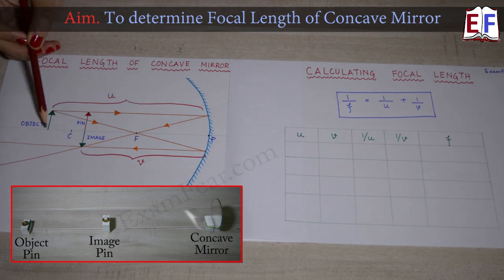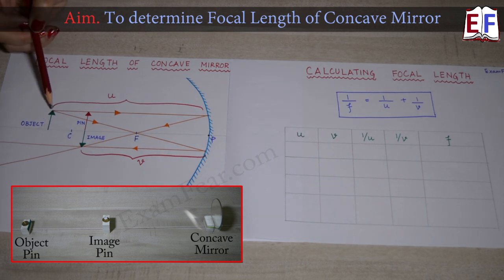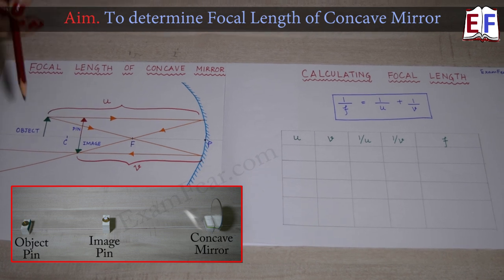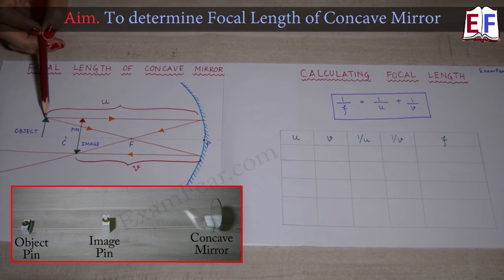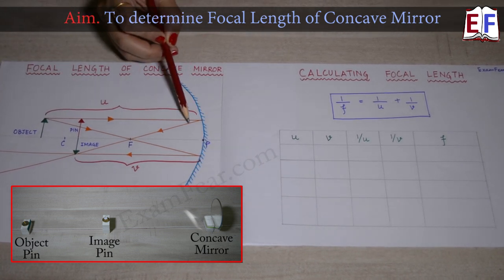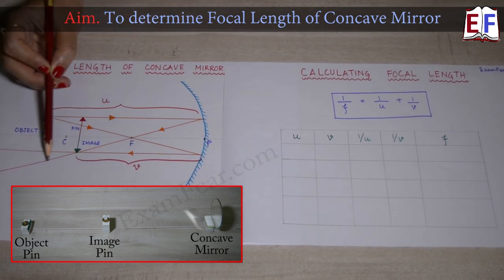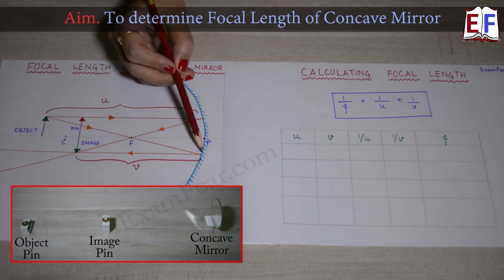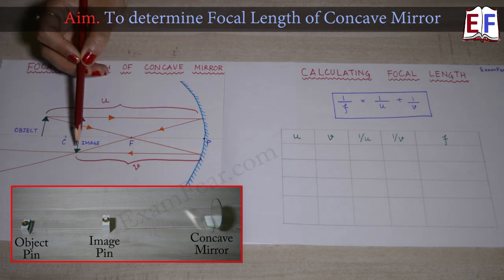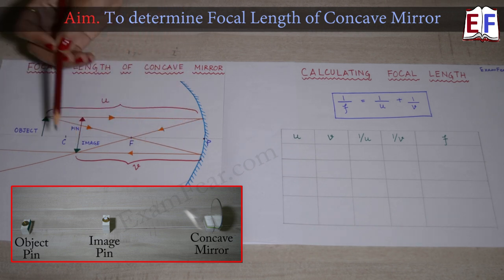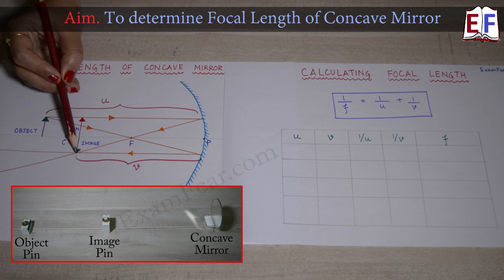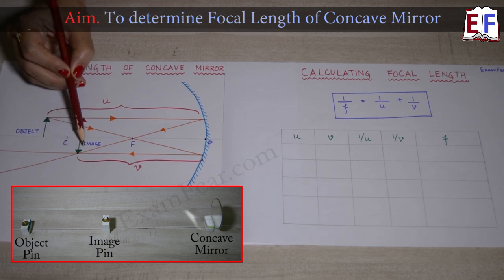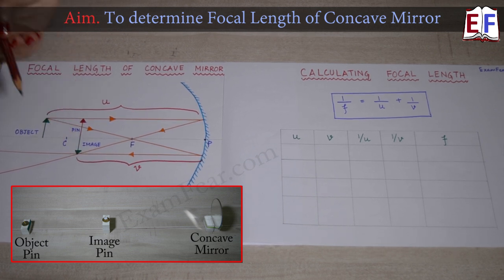When the object is placed beyond the center of curvature, the rays of light parallel to the principal axis pass through the focus, and rays passing through the focus go parallel to the principal axis after reflection, forming a real and inverted image.